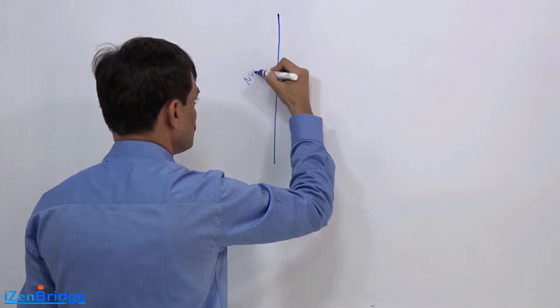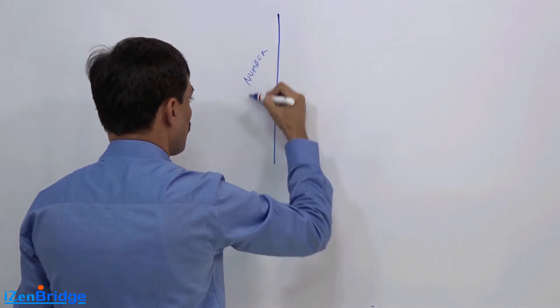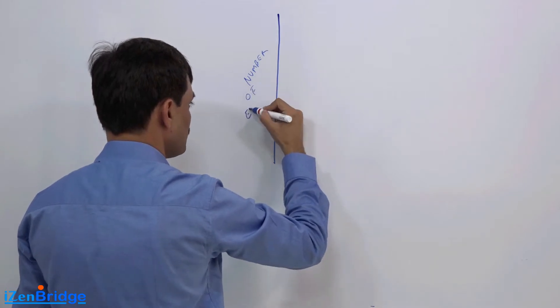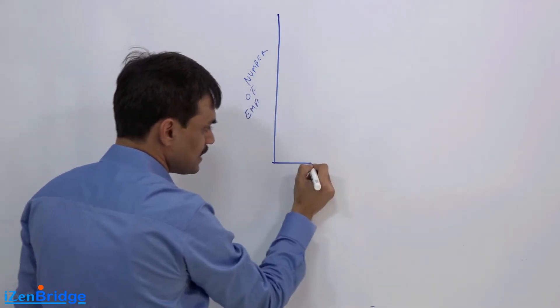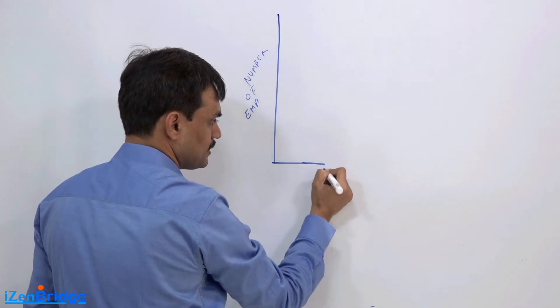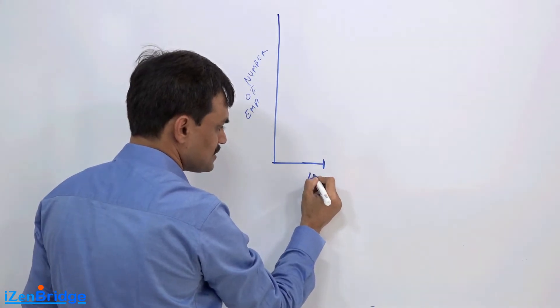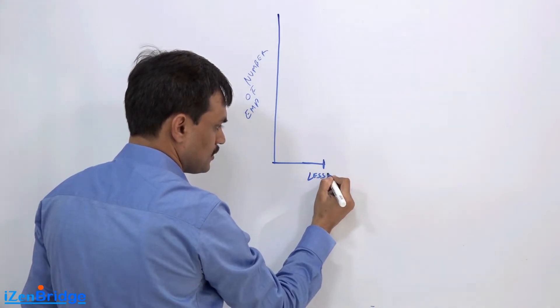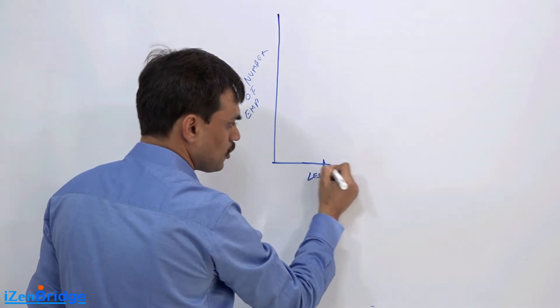What it could look like is here you may show the number of your employees. In this case, you create buckets - say the first one is less than 25, then you talk about 25 to 35.